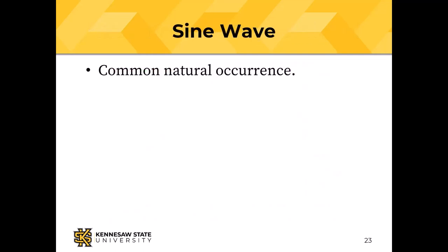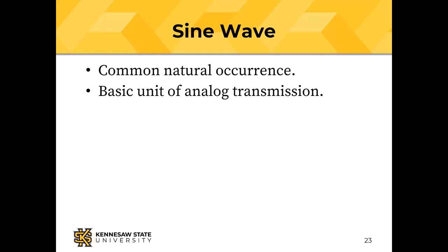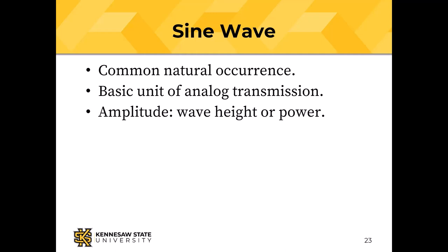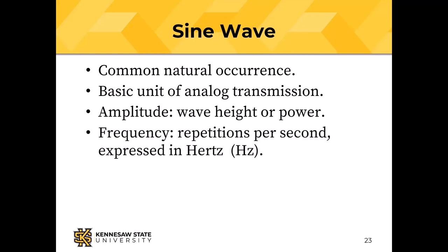The sine wave occurs in nature widely and is the basic unit of analog transmission. The amplitude of a sine wave is the height or power of the wave. Frequency is repetitions per second, expressed in hertz (Hz) — strictly 1/time, but easier to think of as repetitions of the sine wave every second.